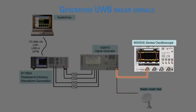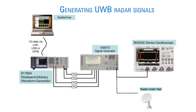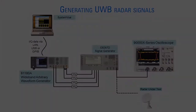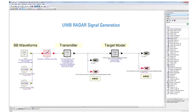However, in this presentation we will look at the signal on the 90000 X Series oscilloscope using the Agilent 89600A vector signal analyzer software. Now let's focus on SystemVue and generating various UWB waveforms.